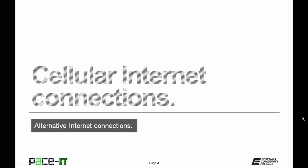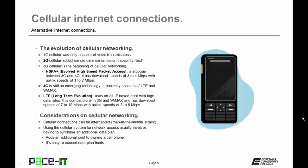We're going to begin by talking about cellular internet connections, starting with the evolution of cellular networking. Cellular communication has been around for a while. It started off with what is now called 1G cellular, which was only capable of voice transmission. The first type of data communication beyond voice occurred with the implementation of second generation cellular, which added simple data transmission capability — specifically text. We didn't have a true connection to the internet until the implementation of 3G, our third generation cellular.